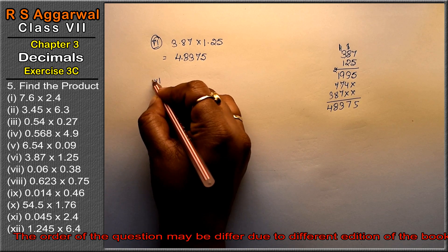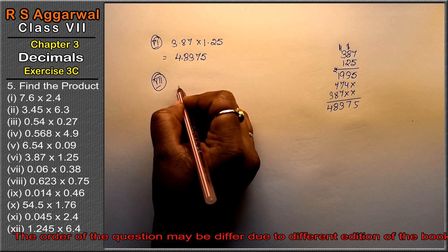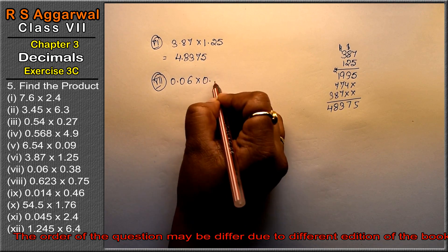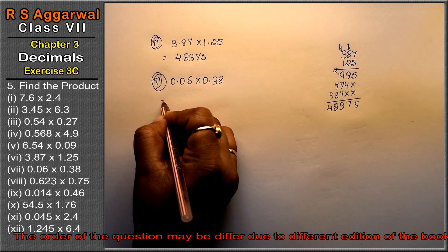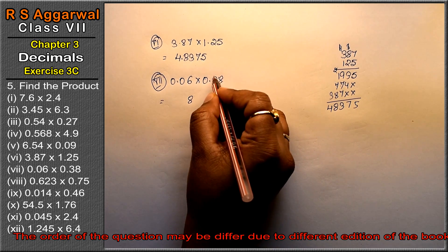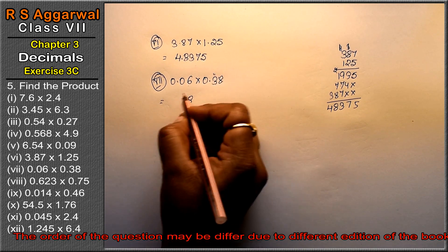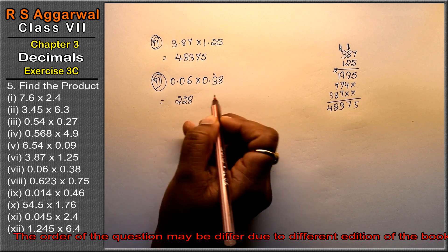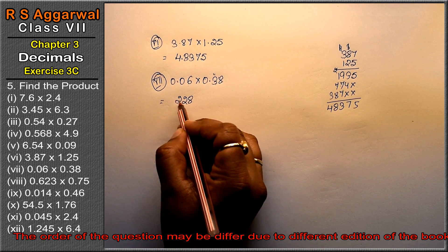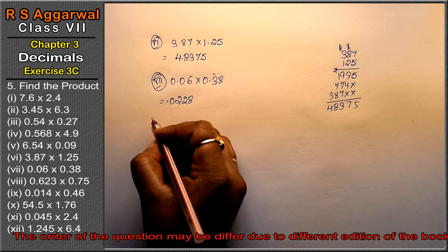Let's do seventh part: 0.06 into 0.38. Multiply 6 and 38 directly. 6 times 8 is 48, carry 4. 6 times 3 is 18, 19, 20, 21, 22. This gives 228. How many decimal places? 2 plus 2 is 4. Since we have only 3 digits, add a 0, then add the point: 0.0228 is the answer.